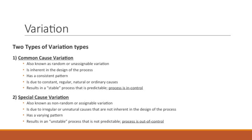Common cause variation is also known as random or natural variation. It's inherent in the design of the process. It has a consistent pattern, which you can start to recognize when you look at your data over time using either a run chart or a control chart, and the variation is due to constant, regular, or ordinary causes. What's important to understand here is that common cause variation results in a stable process that is predictable. The process is in control.